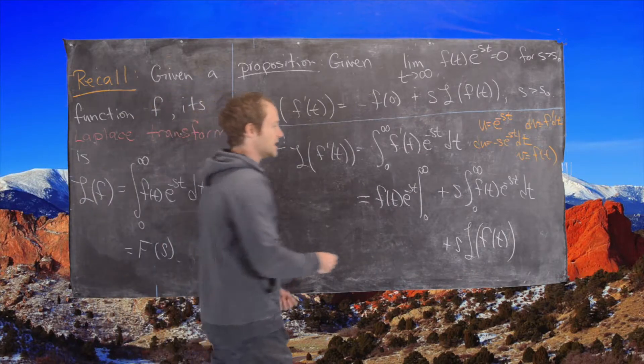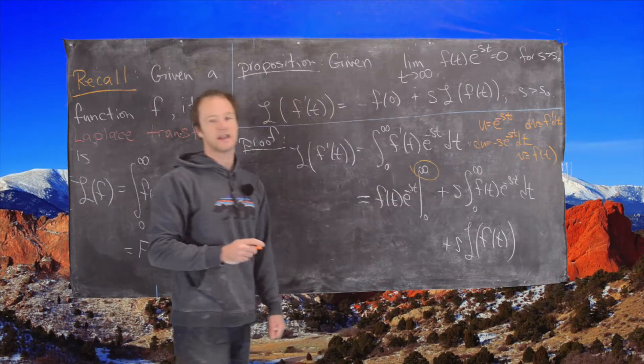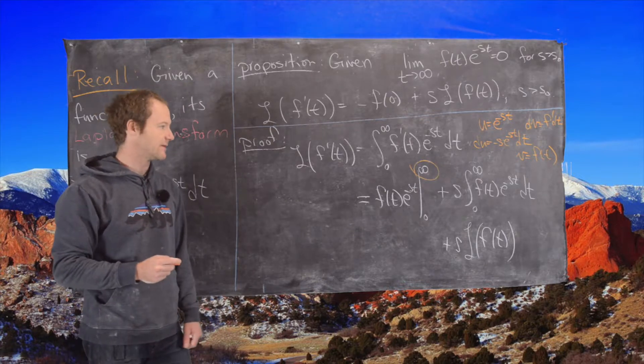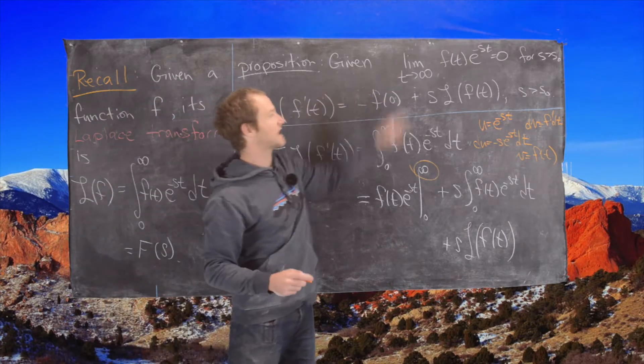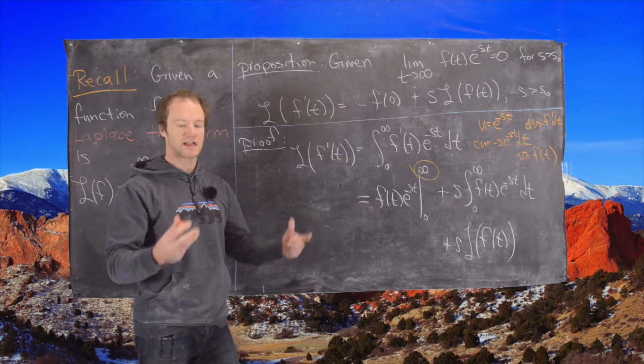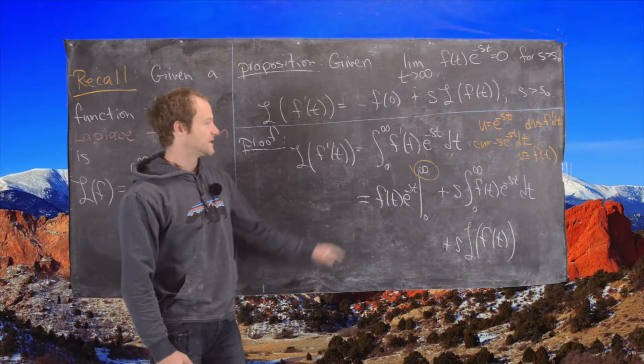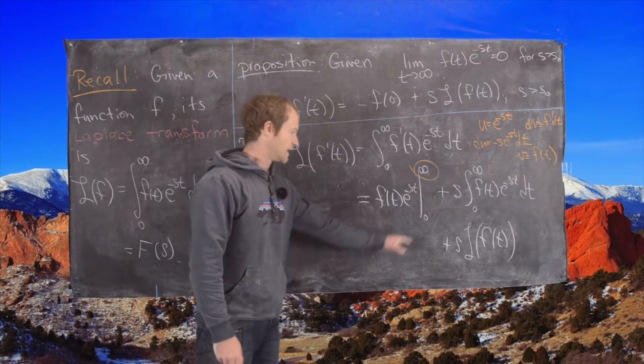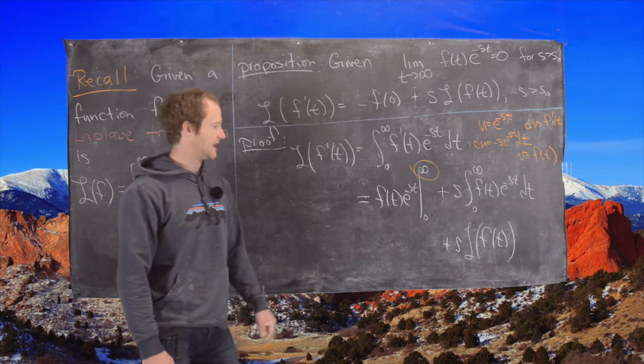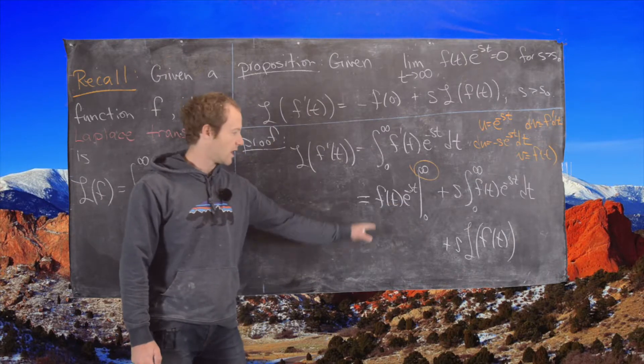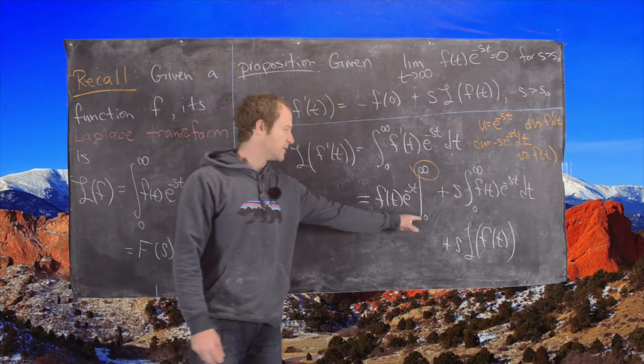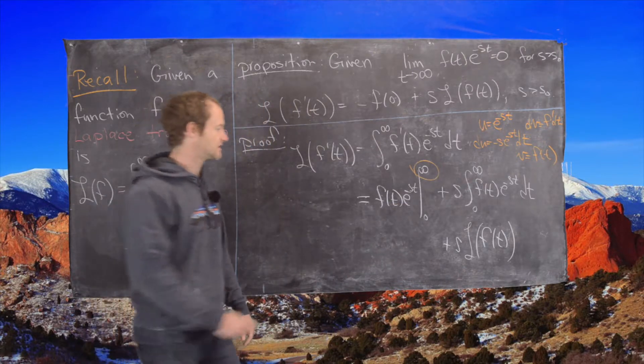Now notice if we plug infinity in, that's the same thing as taking a limit, but notice taking a limit—well, we decided that that limit was equal to 0; that's part of the hypotheses of this result, so that part's going to go to 0. Now if we plug 0 into this, we're going to get e^0, which is 1, and we're going to get f(0), but notice this is the second bound of integration, so that's going to be attached to a minus sign.